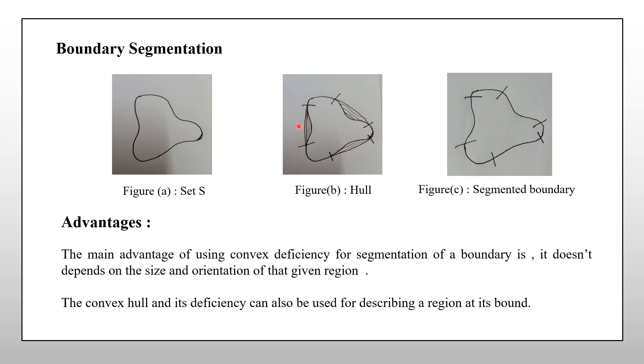The difference between the hull and this is the convex deficiency. Here the shaded region represents the convex deficiency. We need to mark each and every transition that is in and out of the convex hull.